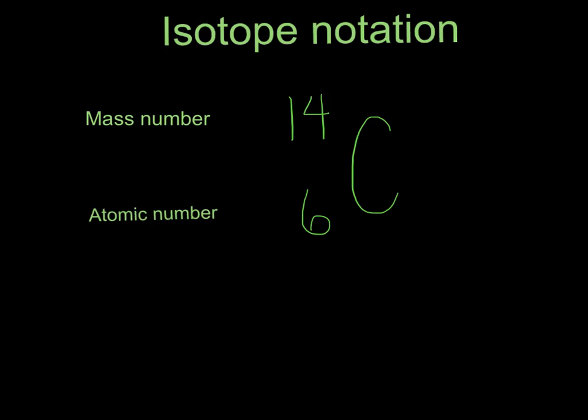Now the mass number at the top represents the number of protons plus the number of neutrons, while the atomic number at the bottom is just the number of protons. And by subtracting the atomic number from the mass number, you can actually find the number of neutrons. Another way that you can see carbon-14 written would be with the name followed by the mass, and the mass is for a specific isotope.